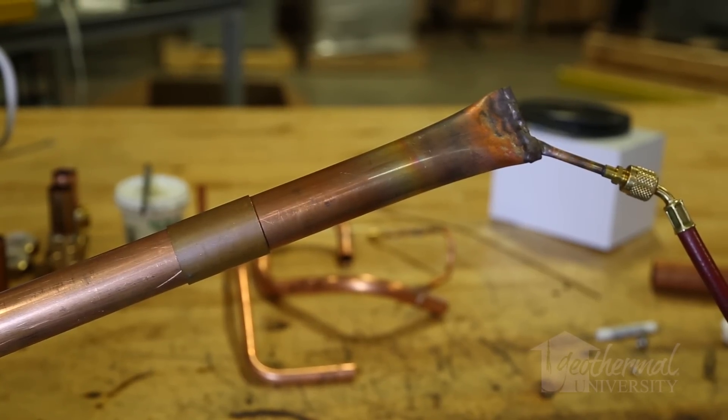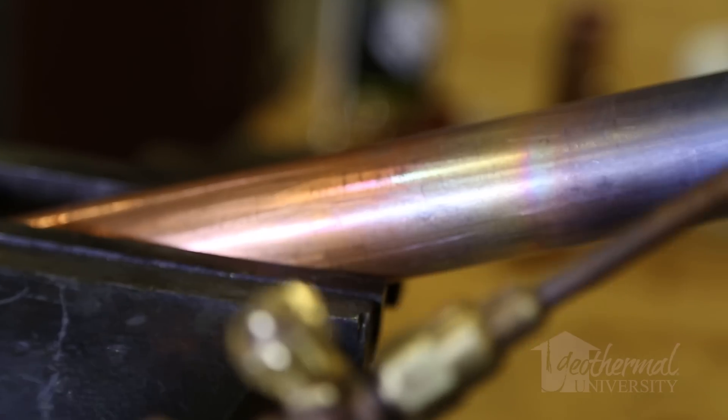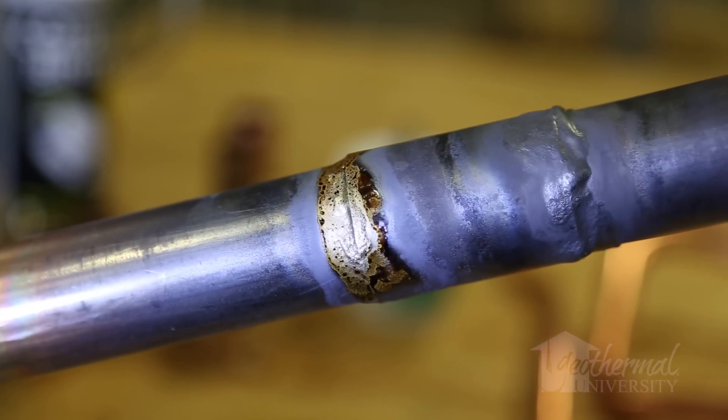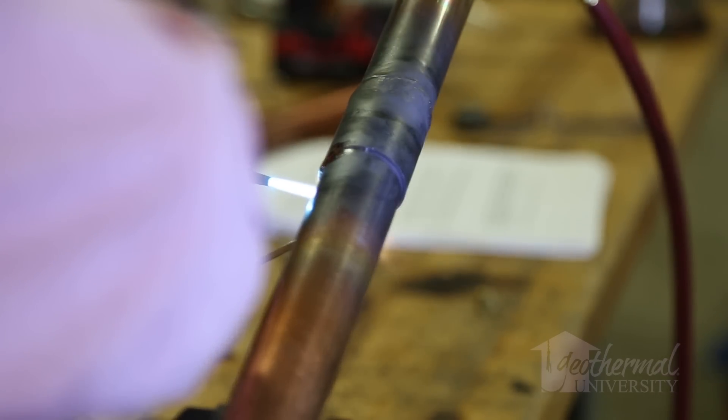The bigger the tubing, the more scaling would form. The purpose of the nitrogen is to displace any oxygen in the lines and minimize the formation of oxides.